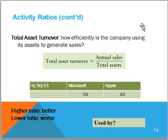One really key ratio for a company that will impact total performance is the total asset turnover. It answers the question: how efficiently is the company using its assets to generate sales overall? For the turnover, we take total sales divided by total assets — the higher the ratio, the better. Microsoft had a total asset turnover of 0.59, while Apple had a turnover of 0.93. This means that for every dollar in total assets, Apple generated 93 cents in sales. This is a very key ratio used by everyone evaluating the company.